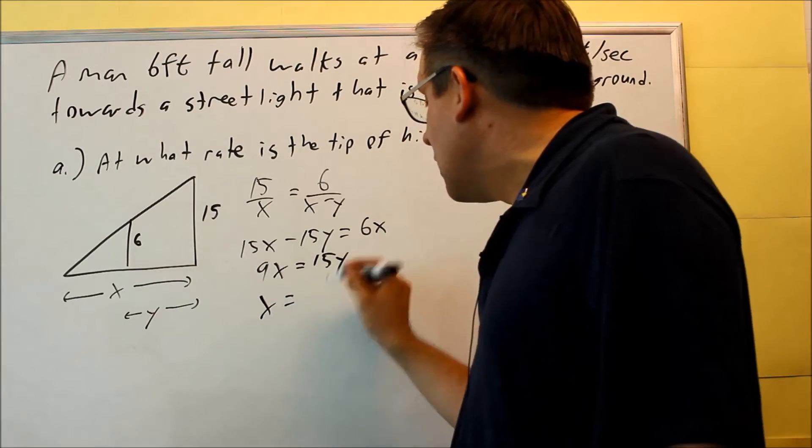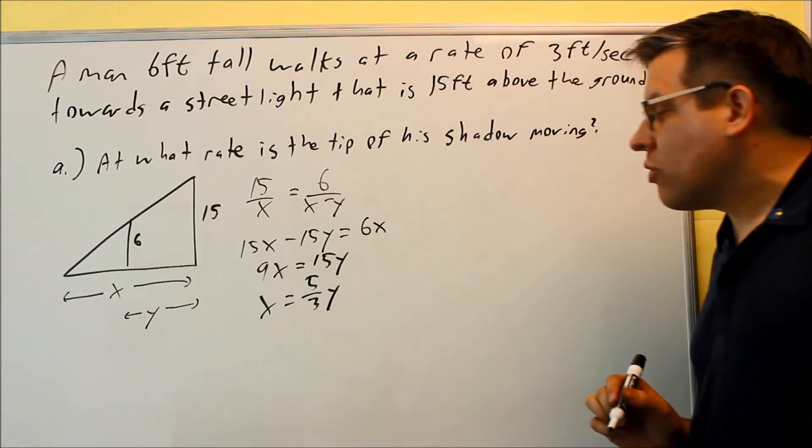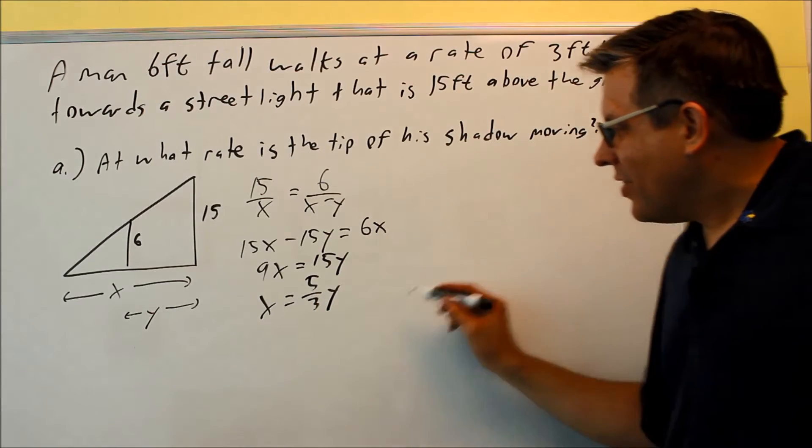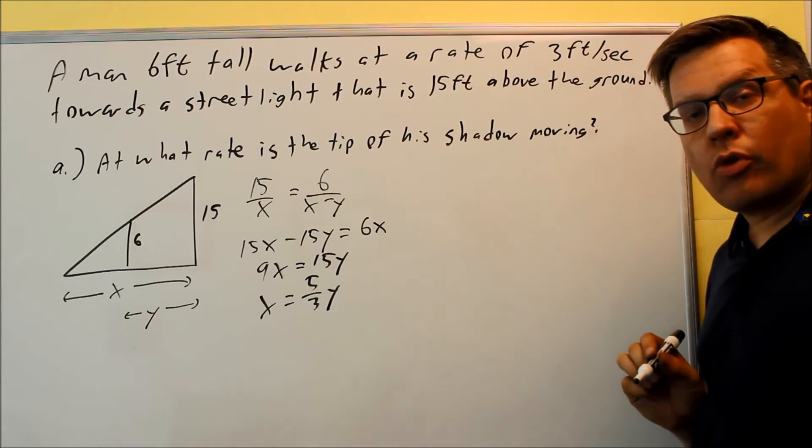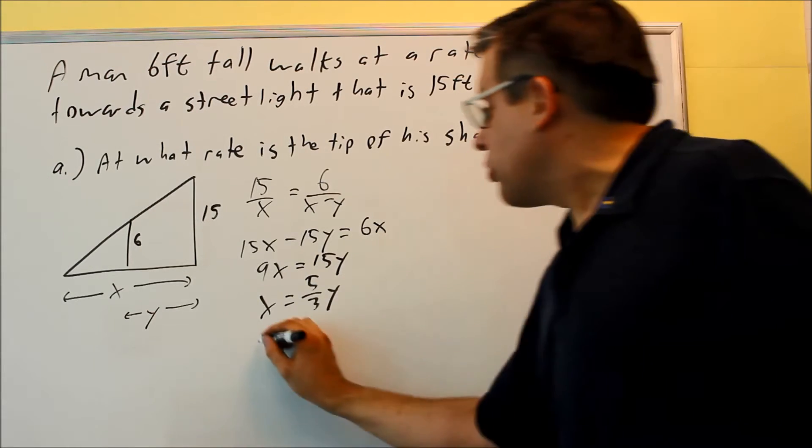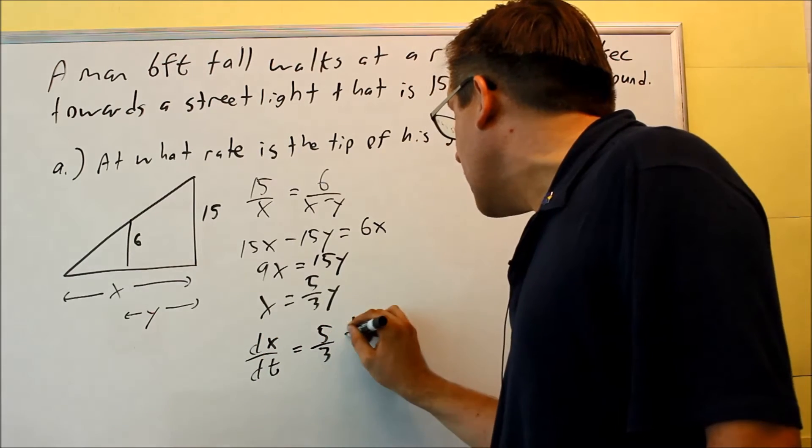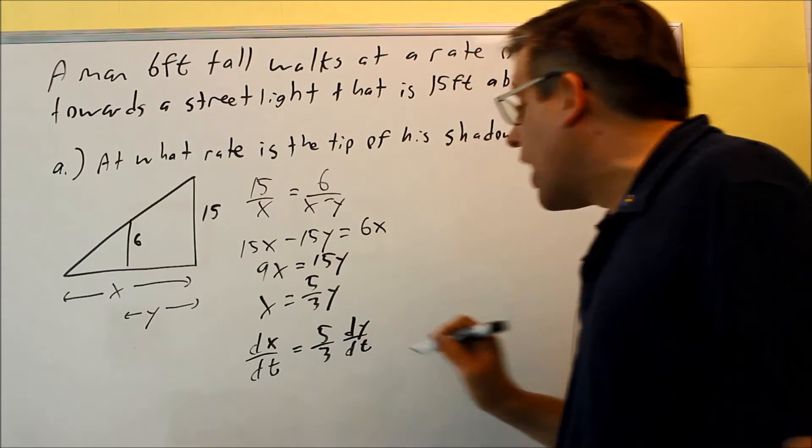Divide both sides by 9. And my x is going to be 15 ninths or 5 thirds. So x is equal to 5 thirds y. This is the formula that I'm going to be working with when I take the derivative. So I'm going to do the derivative of both sides with respect to time. dx dt is going to equal 5 thirds, and then that's going to be dy dt.